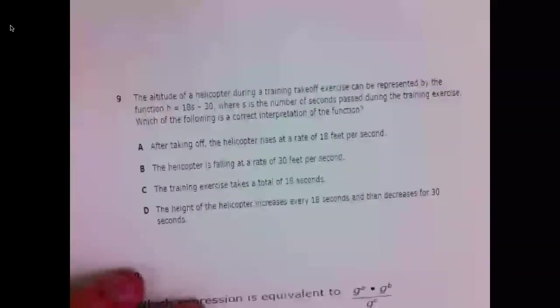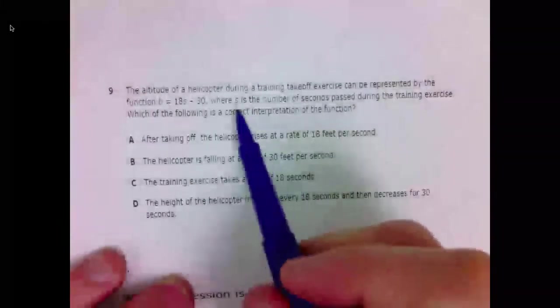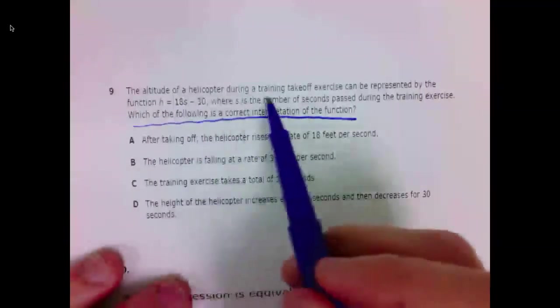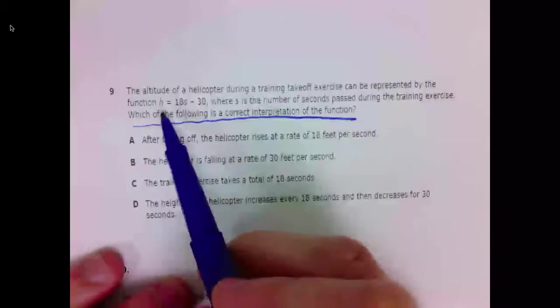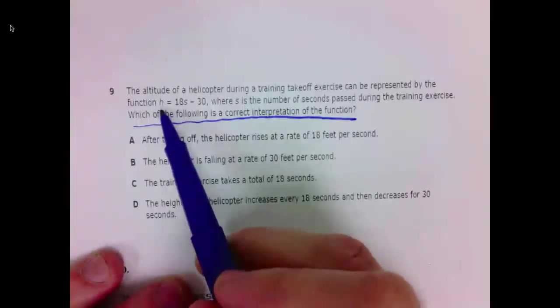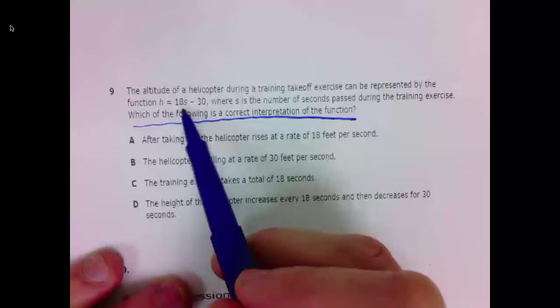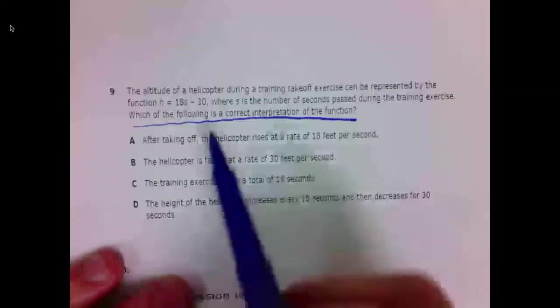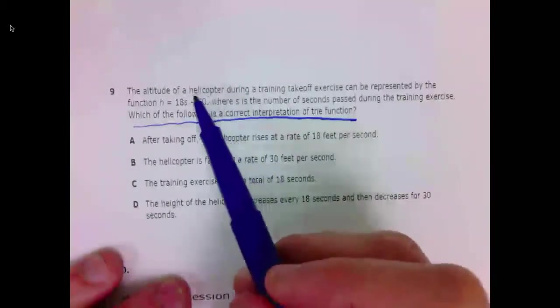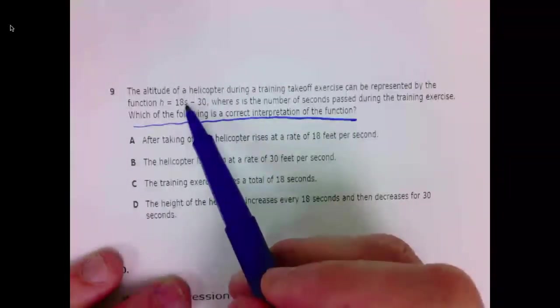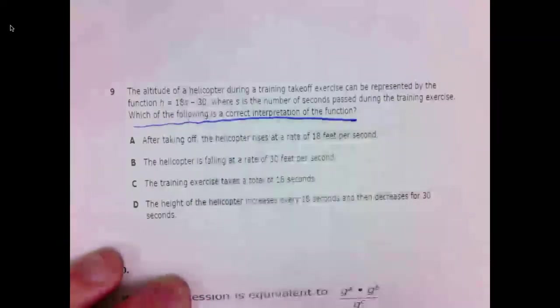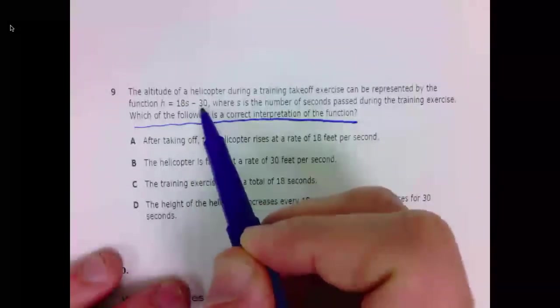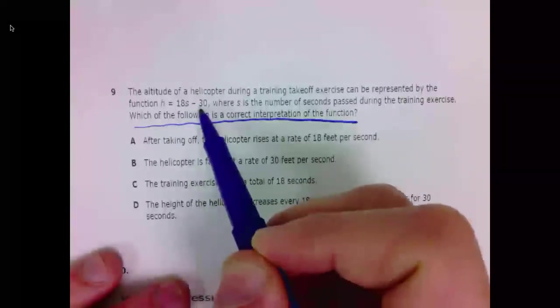Number 9. Which of the following is a correct interpretation of the function? The altitude of a helicopter can be represented by the function H equals. You can think of H as the height. 18S. S is the number of seconds. Subtract 30. So what we're saying is if we substitute some value of seconds into this function, it will output some value of height. 18 is the slope. Negative 30 is the Y-intercept.